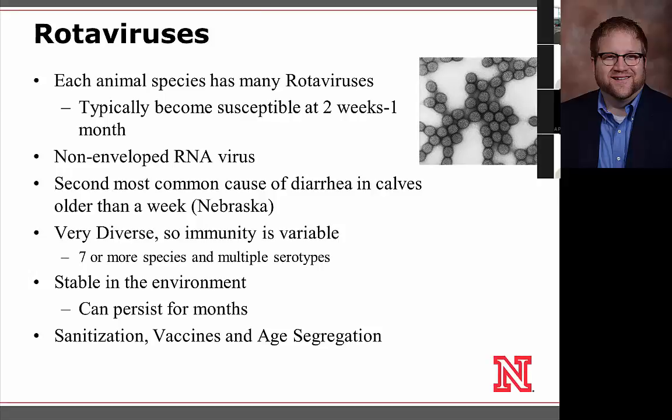These viruses were originally called the Nebraska calf diarrhea virus, but research revealed they're a type of rotavirus. They're very diverse, so immunity is variable — an animal immune to one type may still be susceptible to others, similar to noroviruses in humans. A key challenge is their stability in the environment; once a farm becomes contaminated, rotaviruses can persist for months depending on temperature and humidity. Management includes sanitization, age segregation, and vaccines available for a variety of species.